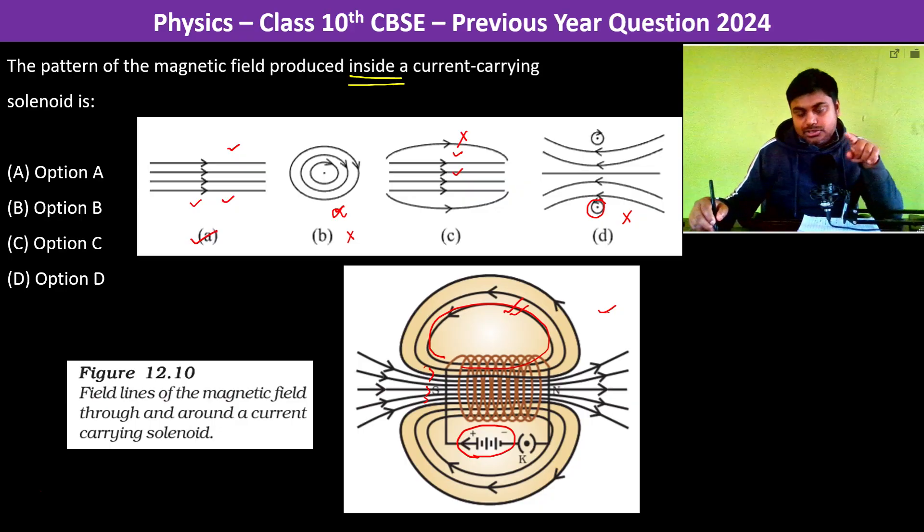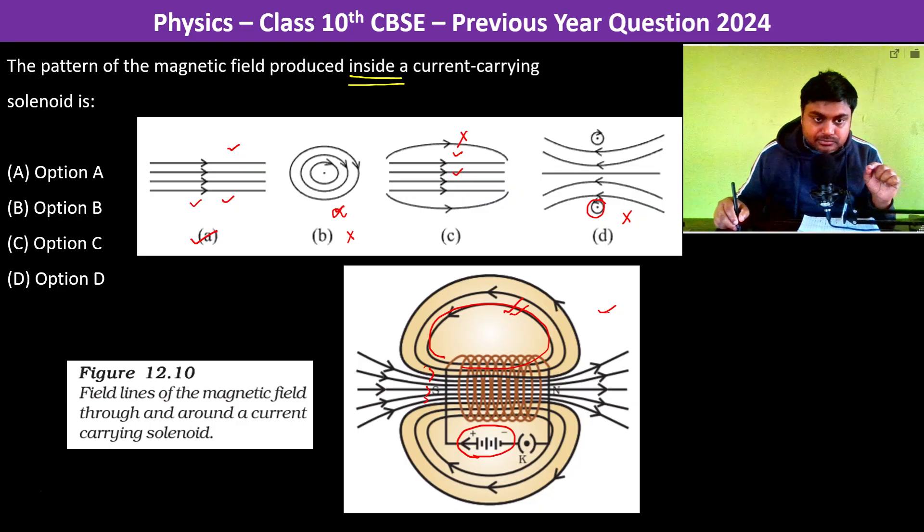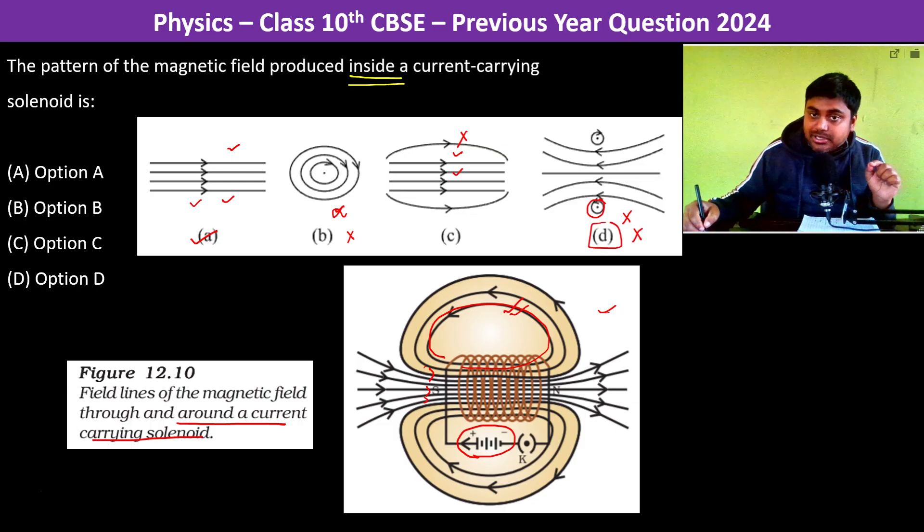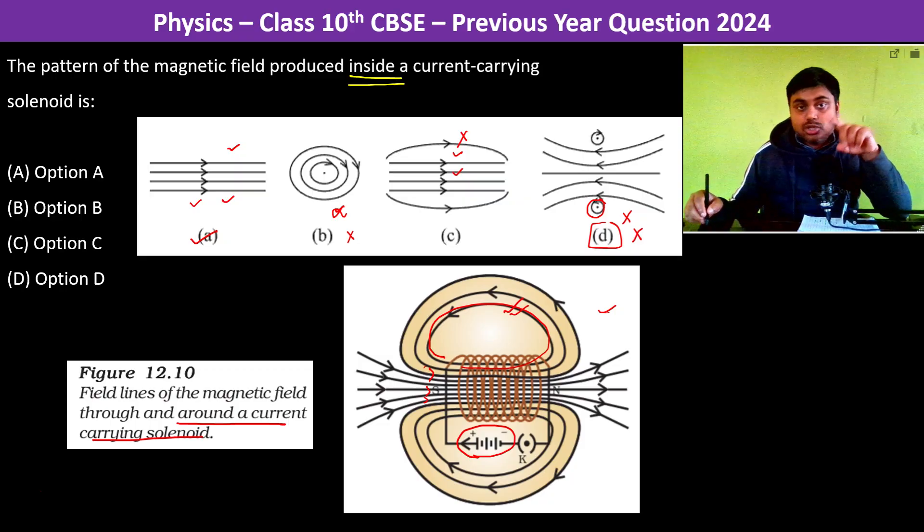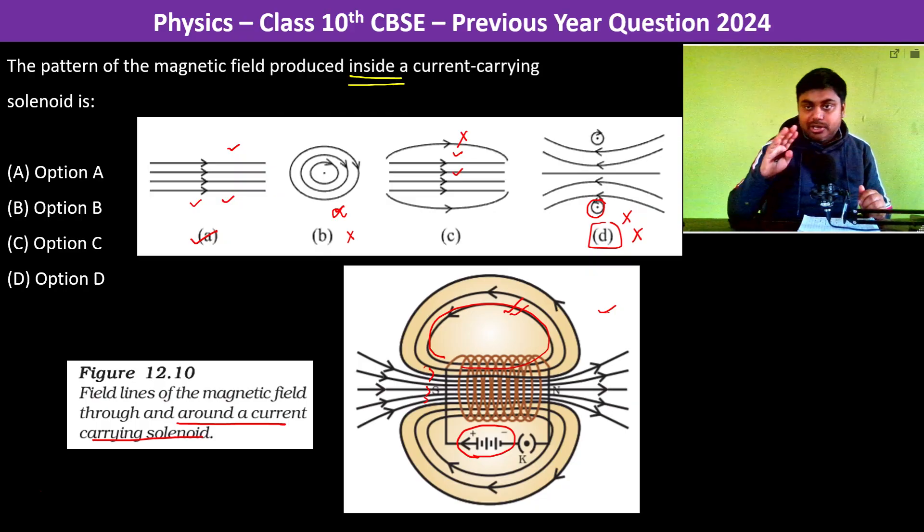Now if you see figure 12.10, it is very clearly stated that around a current carrying solenoid, some students may feel that D also may be the answer, but D is not the answer because the question is not about how the magnetic field lines are about the solenoid.